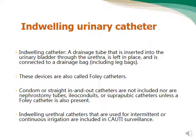These devices are also called Foley catheters. However, this is different from other devices that deal with urine, like condom or straight in-and-out catheters, which are not considered Foley catheters because they don't reside inside the urethra connecting urine from the urinary bladder to the collection bag. Other types of urine drainage, like nephrostomy tubes, ileal conduit, or suprapubic catheters, are also not considered Foley catheters.